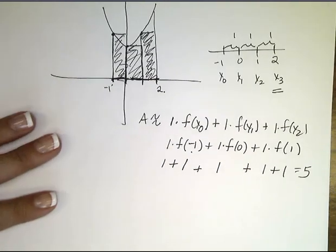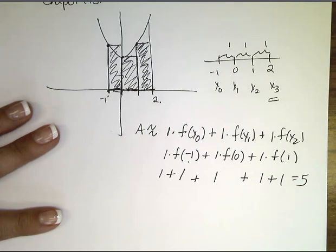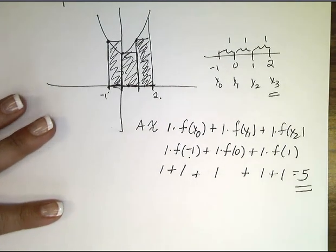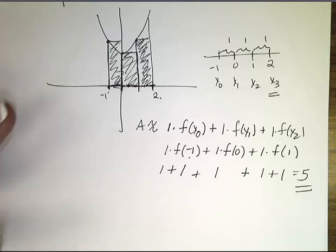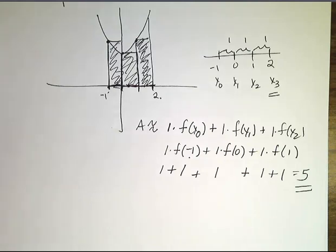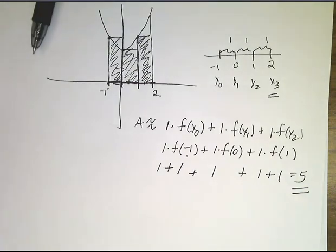So in the first case we had 8, and in this case we have 5 — and those are very, very different. It seems like we would like to develop a process that makes the approximation better.